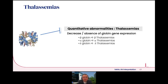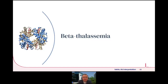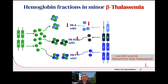Thalassemias are quantitative abnormalities — as opposed to qualitative abnormalities, which are the hemoglobin variants not covered in this webinar. In thalassemia, it is always about the increase or decrease in quantity of globin chains leading to disease. Each different globin type can result in its respective thalassemia.